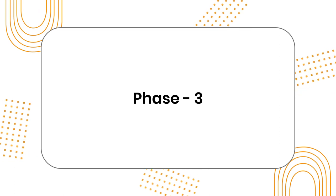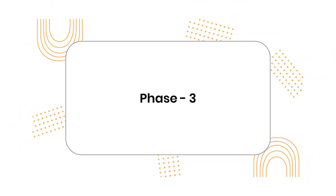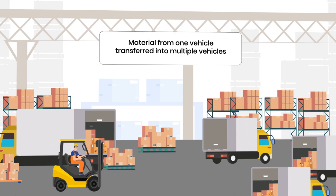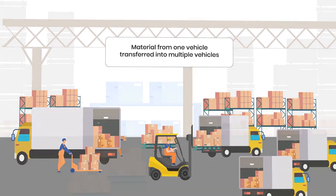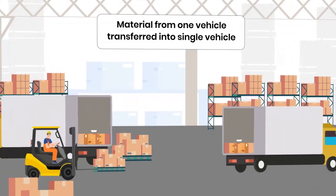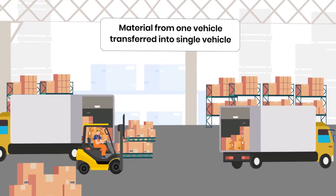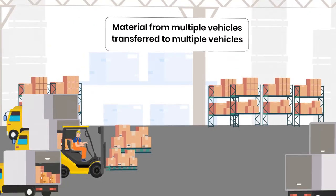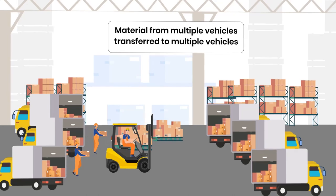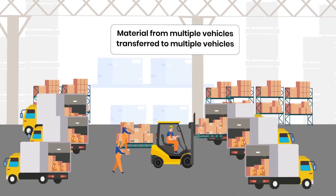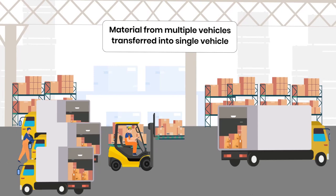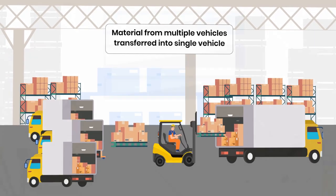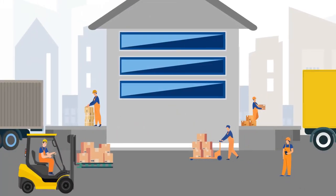In phase 3, John implements functions like creation of cross-stuffing instructions, involving one source vehicle to many destination vehicles, one source vehicle to one destination vehicle, multiple source vehicles to multiple destination vehicles, and multiple source vehicles to one destination vehicle, as well as execution of cross-stuffing instructions.